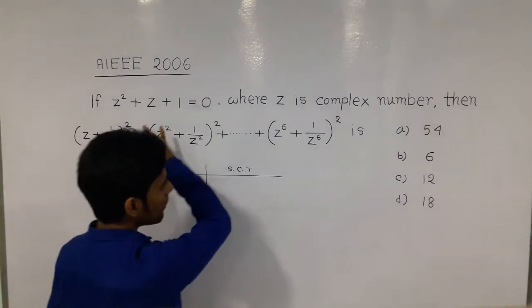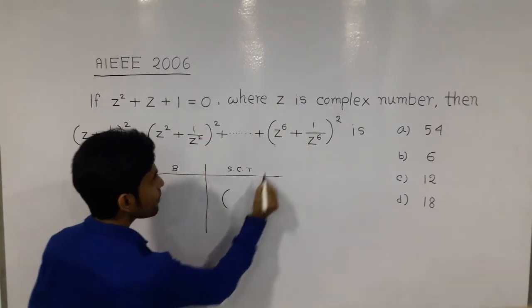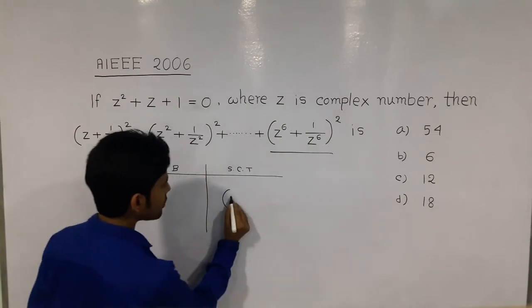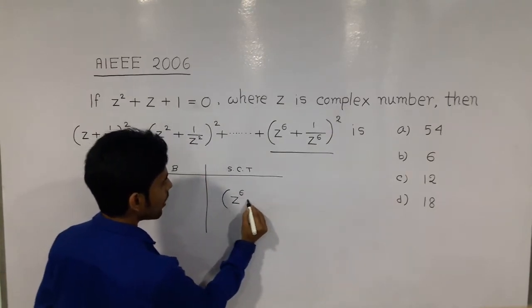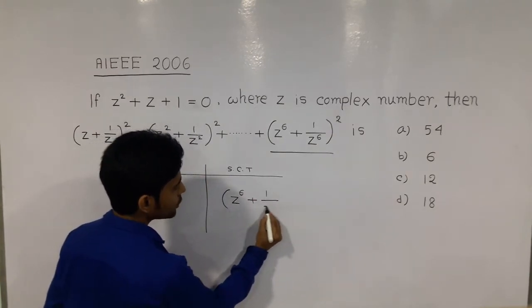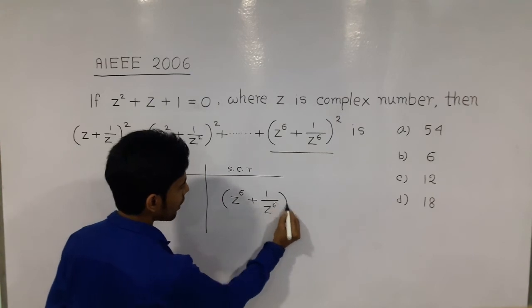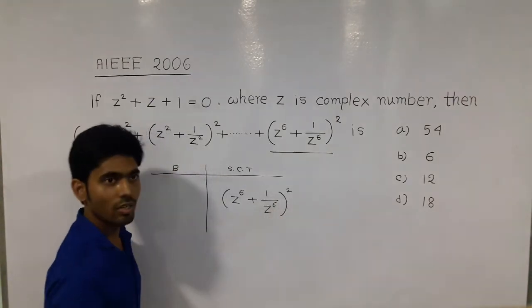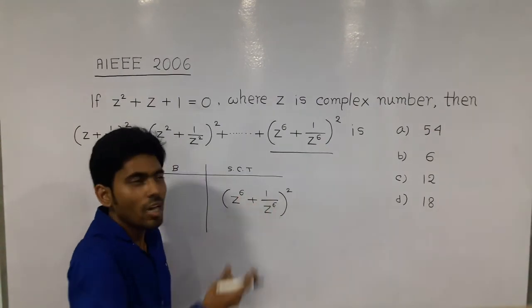First I will tell you what is the last term. The last term is (Z⁶ + 1/Z⁶)². Okay?